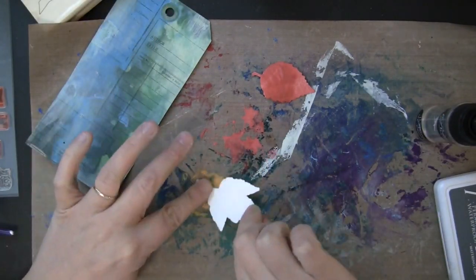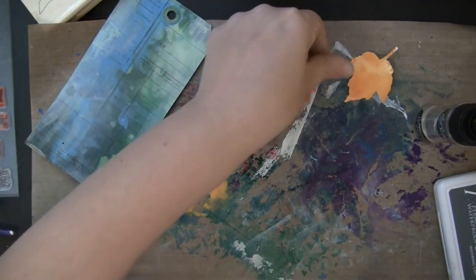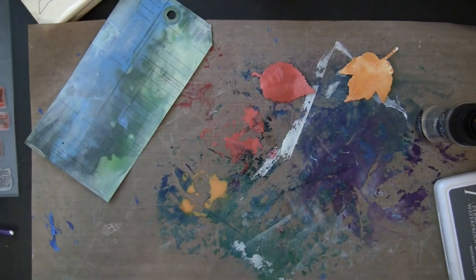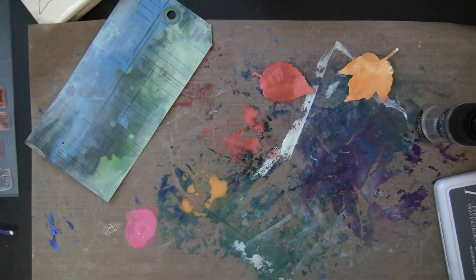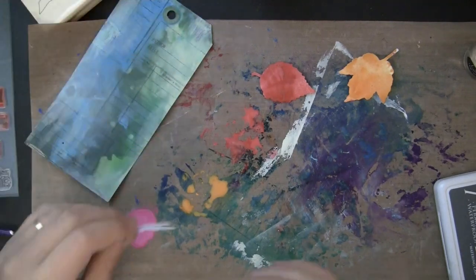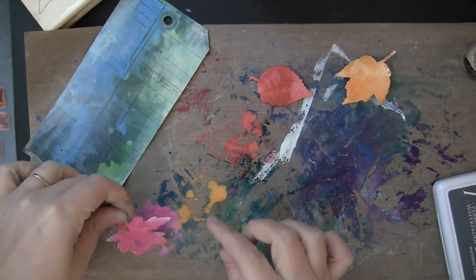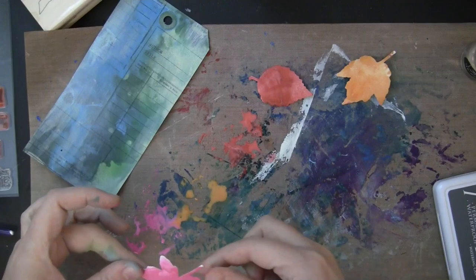Fired Brick, that was the red color, and then I'm also going to do some pink, because I figured, what the heck, let's have some pink leaves, and the pink color is Picked Raspberry. And I'm just pressing my leaves into that paint, and you can see I also added a little bit of water to the paint as well.